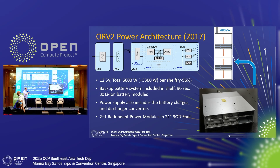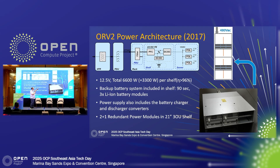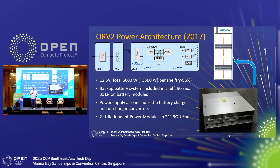In each one of those power shelves there's a rack-level BBU — one-to-one, a BBU module to the power supply in the ORV2. In the back it's got a solid bus bar, meaning there are holes in the bus bar with nuts and bolts that connect them together. This is ORV2, which has been around for quite a while and was very good. It puts out 12.5 volts because, as you may know, servers run on 12 volts.